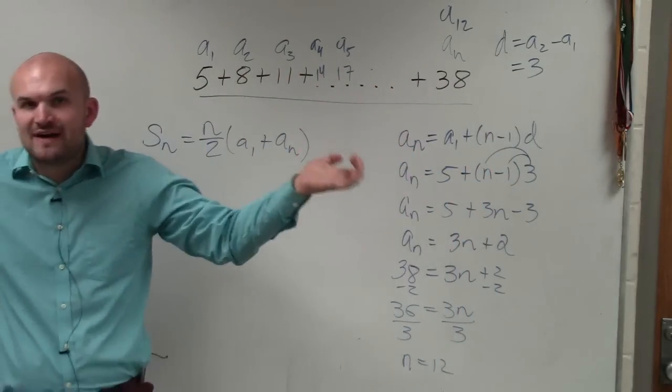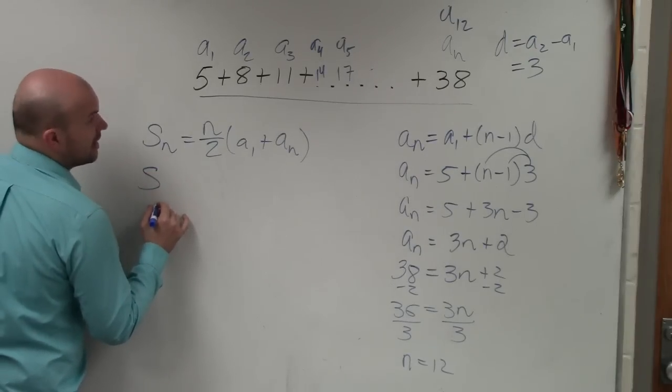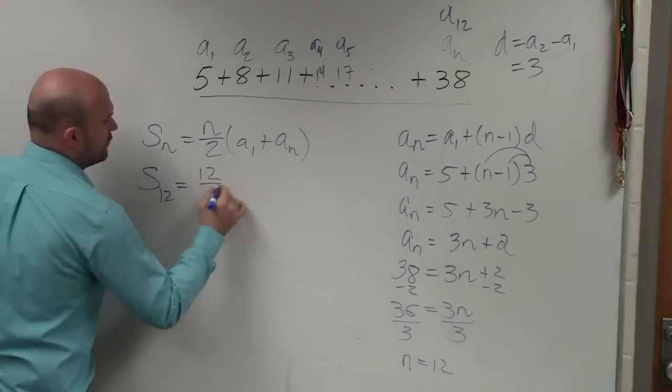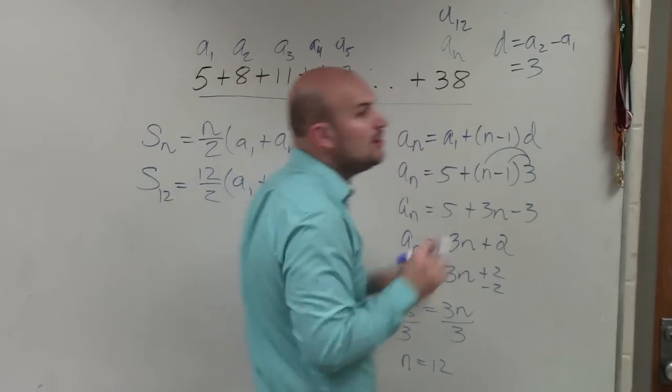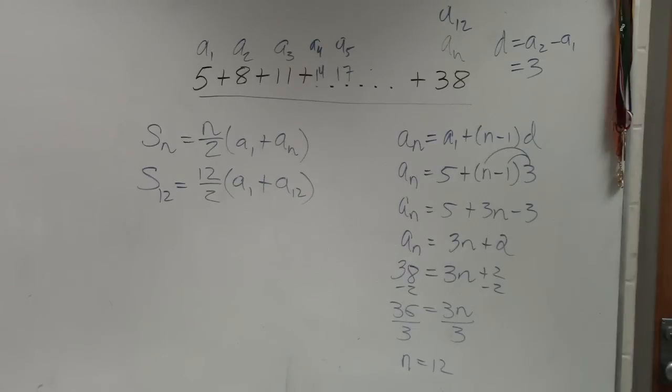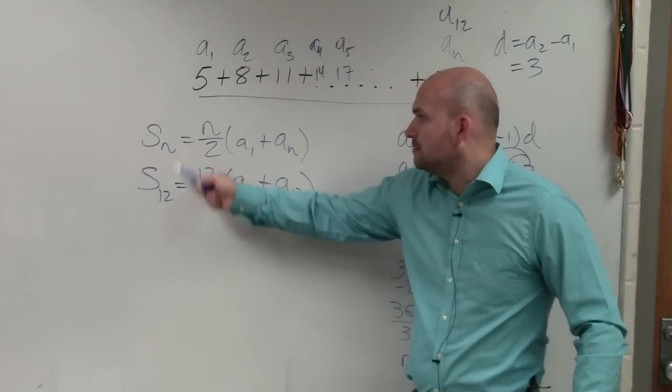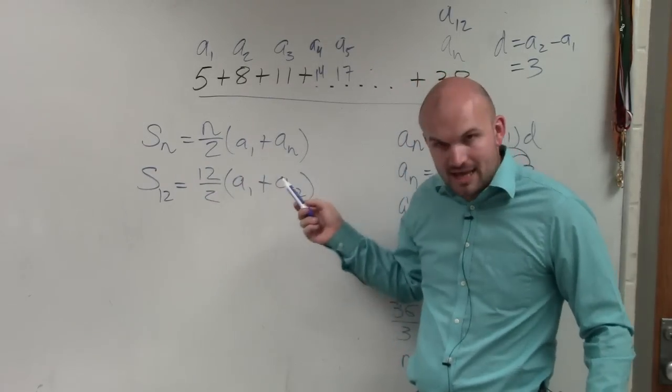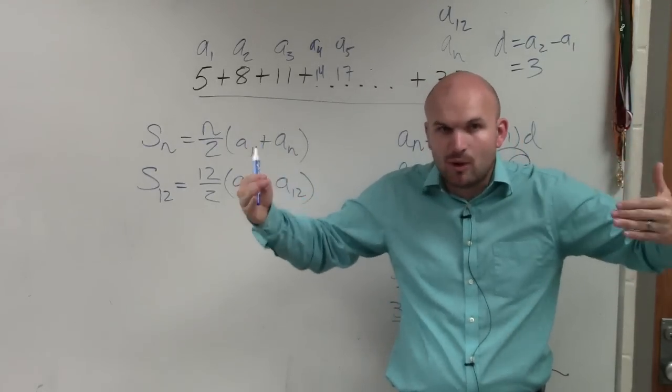So the sum of 12 terms is going to equal 12 over 2 times a sub 1 plus a sub 12. All I did for the first step was just plug in 12 in for n. Do you guys see how I replaced 12 in for n? I replaced that everywhere. Do you guys see that? Because n represents 12 now. n represents the number of terms. We know the number of terms is 12.